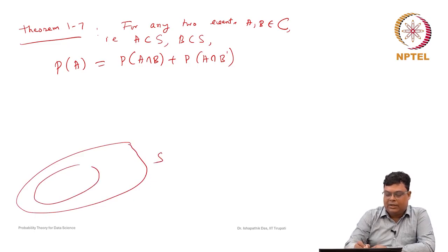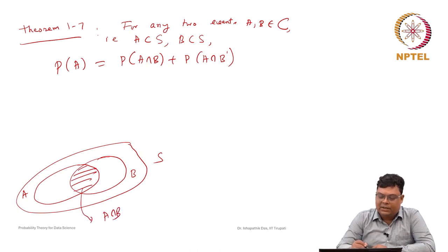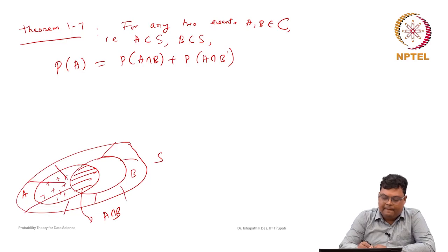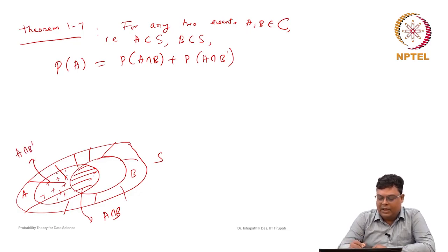If we show it by a Venn diagram — suppose this is S, this is A and this is B — then A can be represented as A intersection B, which is the overlapping part of A and B, plus A intersection B complement, which is the remaining part of A outside B. So A is the union of A intersection B and A intersection B complement.